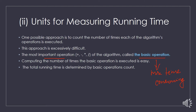The total running time is normally determined by the basic operation count. We can write total running time as approximately equal to the execution time of the basic operation of an algorithm multiplied by the count of basic operations.